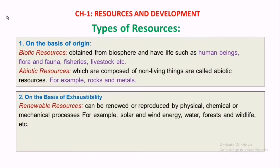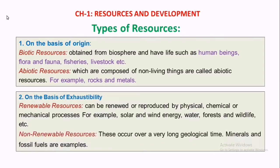The second classification is on the basis of exhaustibility, which also has two types: renewable resources and non-renewable resources. Examples of renewable resources are water and wind energy; examples of non-renewable resources are minerals and fossil fuels.